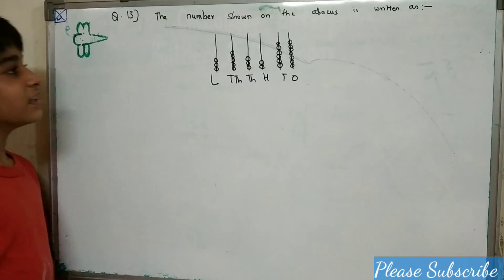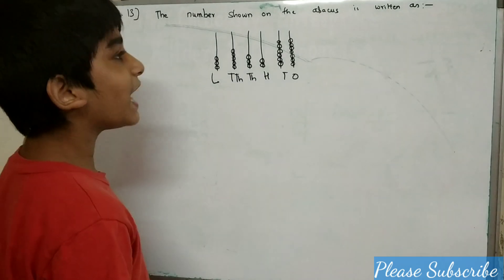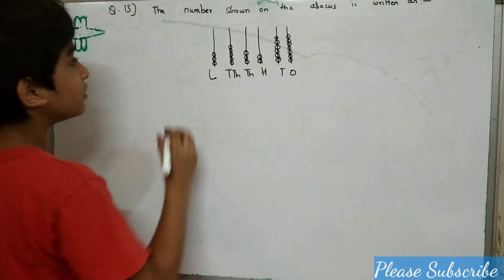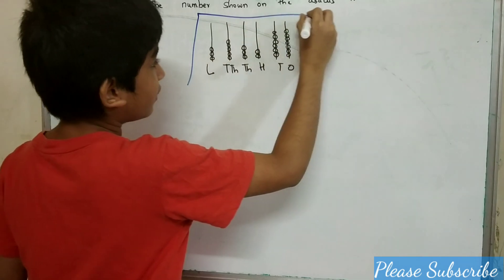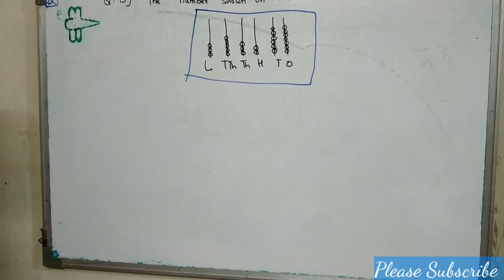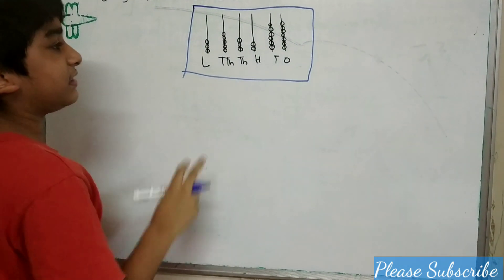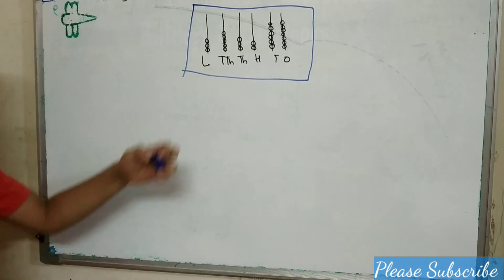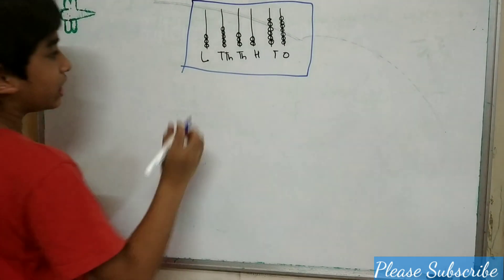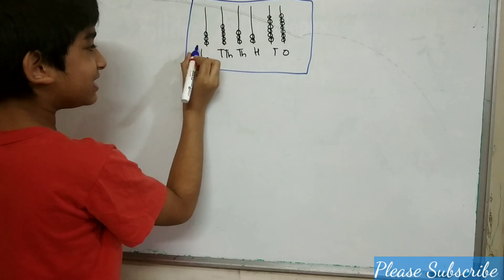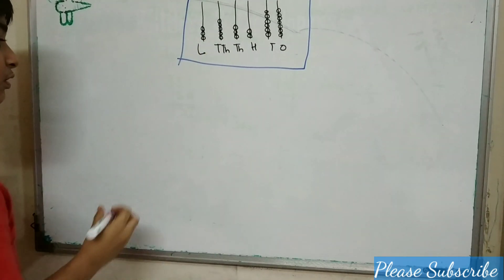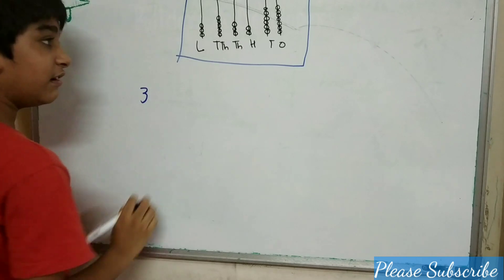This is question number 13. The number on the lambda abacus is written as follows. This is the abacus — we just have to count the beads in each row. There are 3 beads in the lakhs row, so we write 3 here.